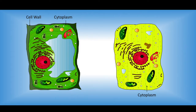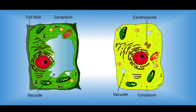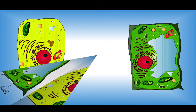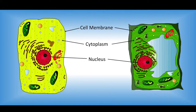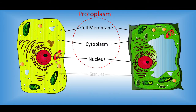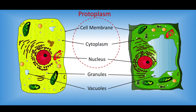The generalized cell differs for plant and animal due to the presence and absence of certain parts or organelles. Vacuoles in plant cells are much larger in size compared to animal cells. Animal cells contain centrosomes whereas plant cells do not. Plant cells contain plastids whereas animal cells lack them. All plant and animal cells consist of living and non-living parts. The living part includes the cell membrane, the cytoplasm, and the nucleus — all three together are known as protoplasm. The non-living parts of the cell are granules and vacuoles.